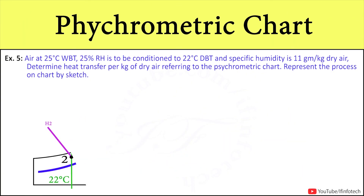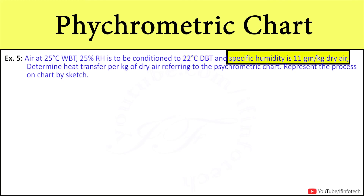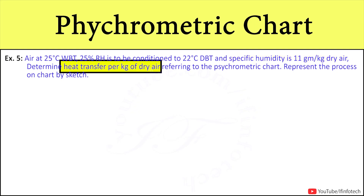In the next problem, air at 25 degree Celsius wet bulb temperature and 25% relative humidity is to be conditioned to 22 degree Celsius dry bulb temperature and specific humidity of 11 grams per kg of dry air. Determine heat transfer per kg of dry air referring to the psychrometric chart, and represent the process on the psychrometric chart by sketch.